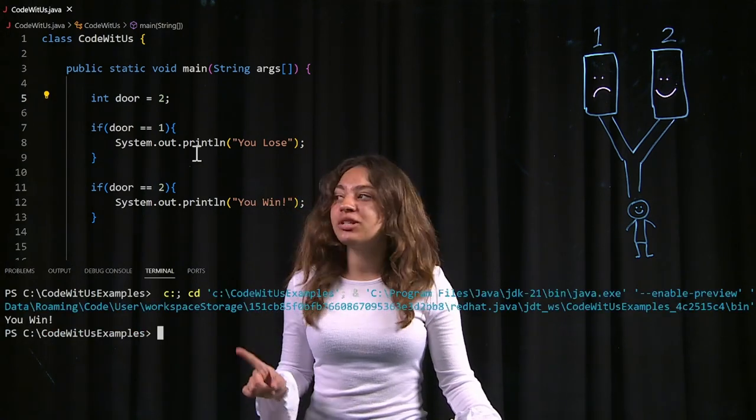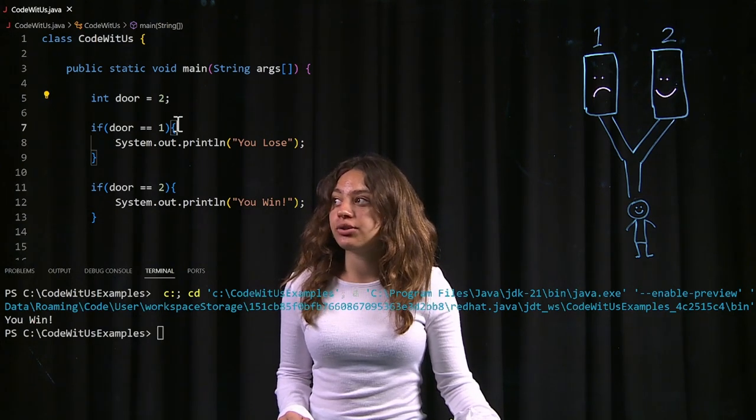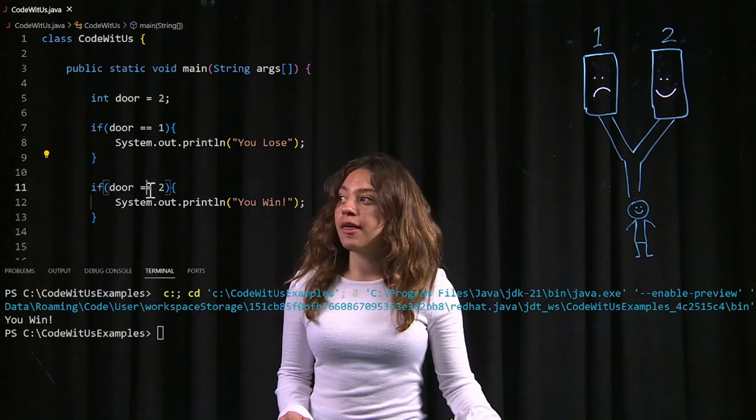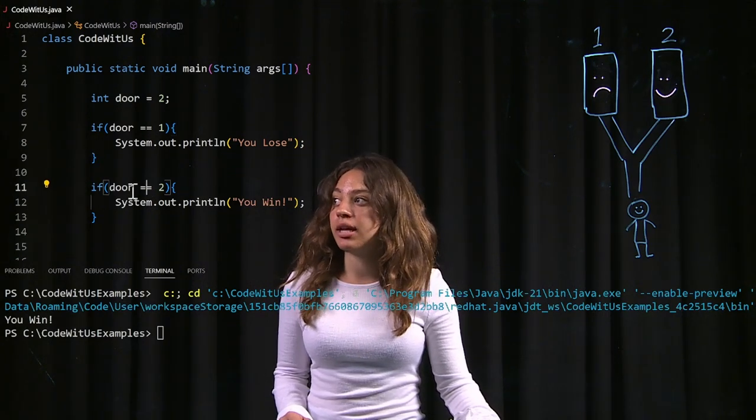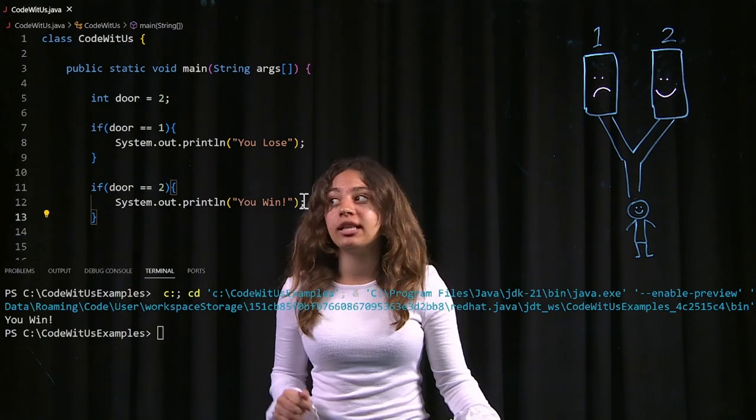So again, one more time. I start at the first if statement. That is not a true statement, so I skip that block of code. I then move on to my second if statement. That is a true conditional statement, so I'm going to print out what's in that block of code.